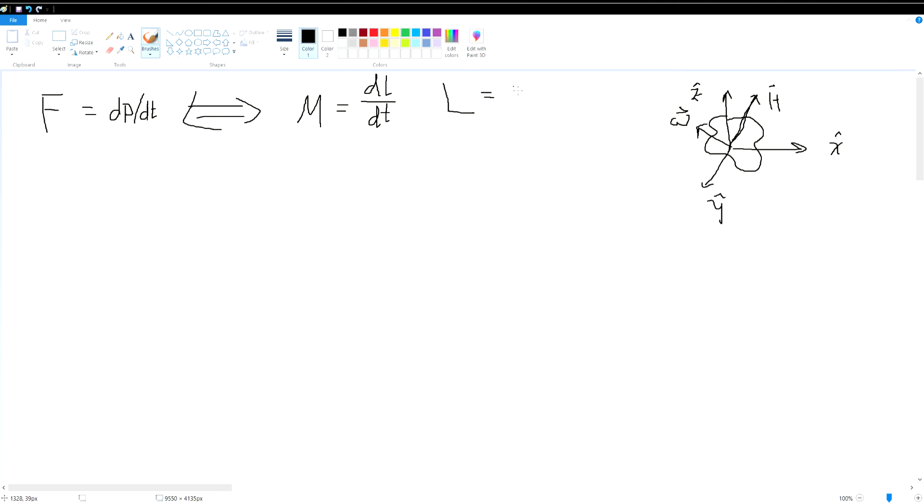So angular momentum is defined as the moment of inertia times omega. So in order to find this, we need to break this down.